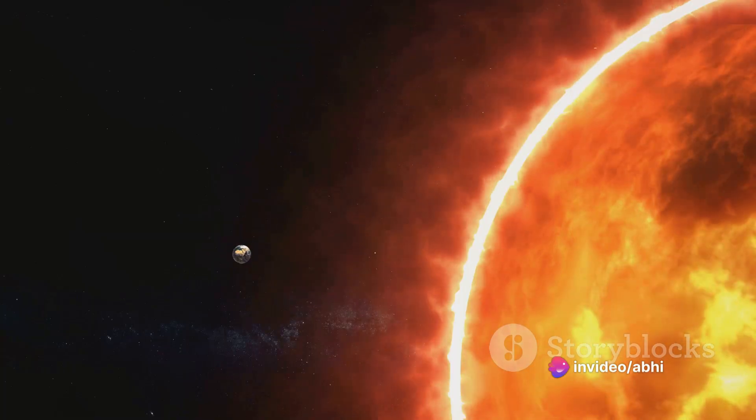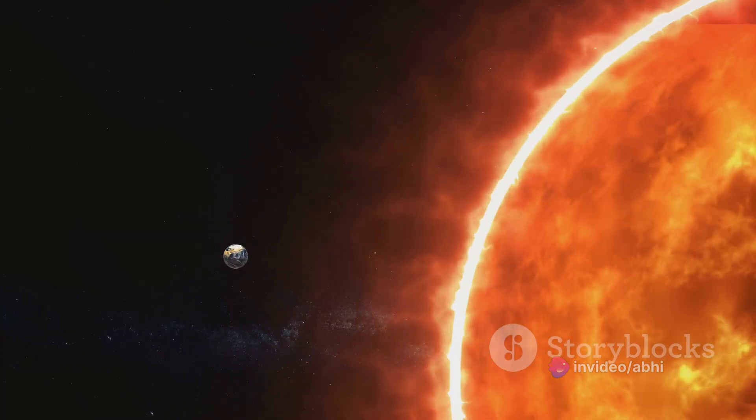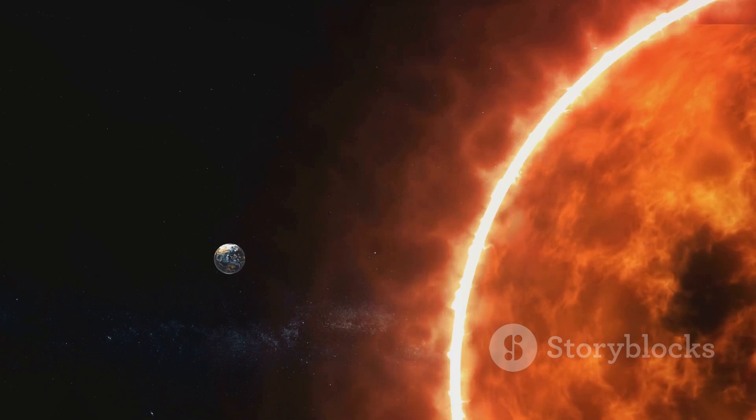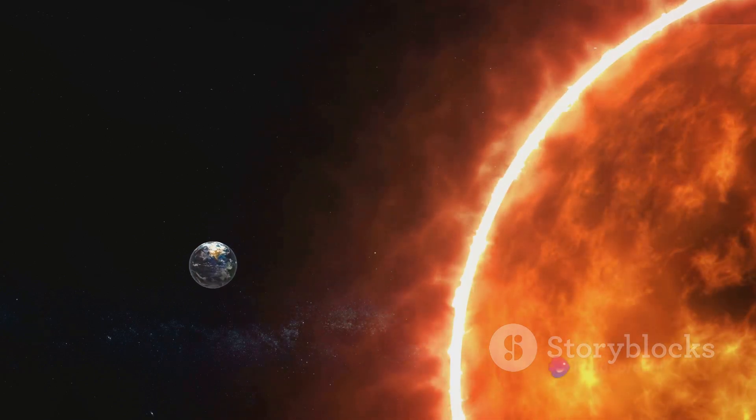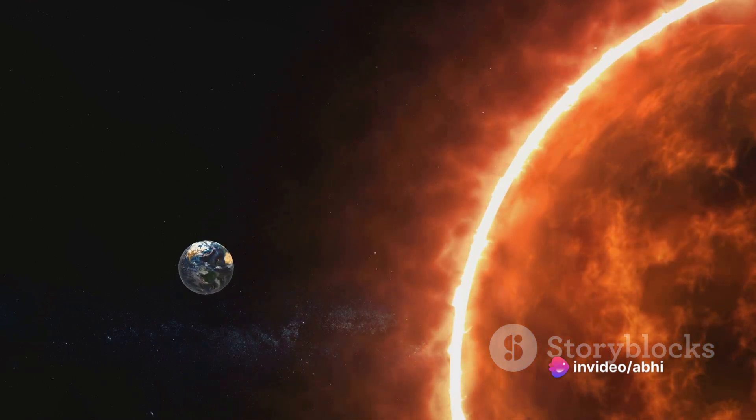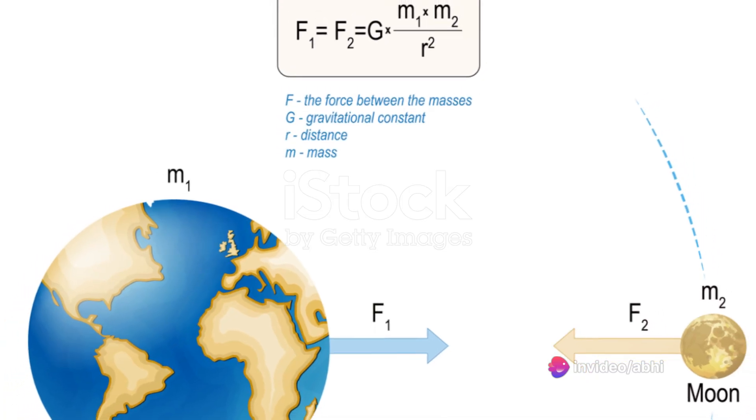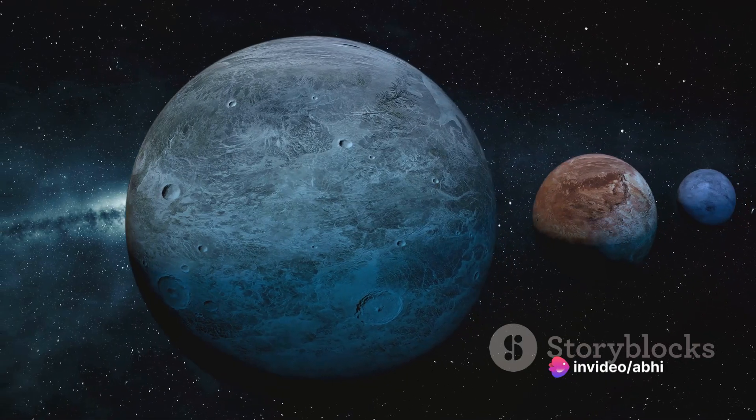Now consider a planet, Earth, for example. When it finds itself drawn closer to the blazing Sun, the strength of this gravitational interaction intensifies. Imagine it like a magnetic pull. The nearer the objects, the stronger the attraction.